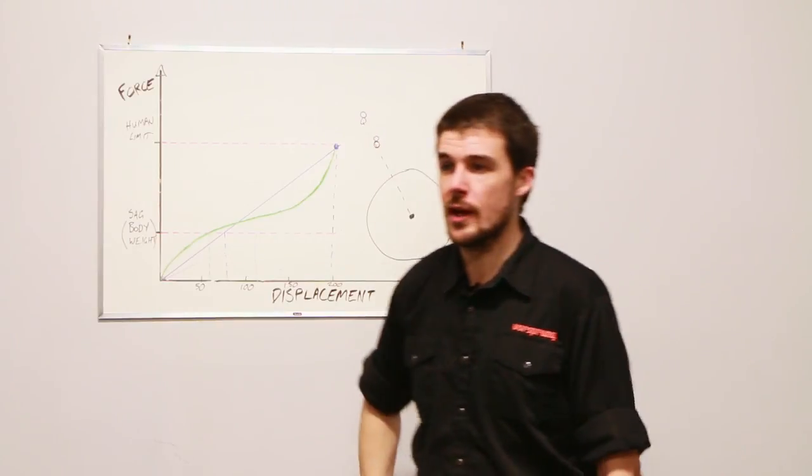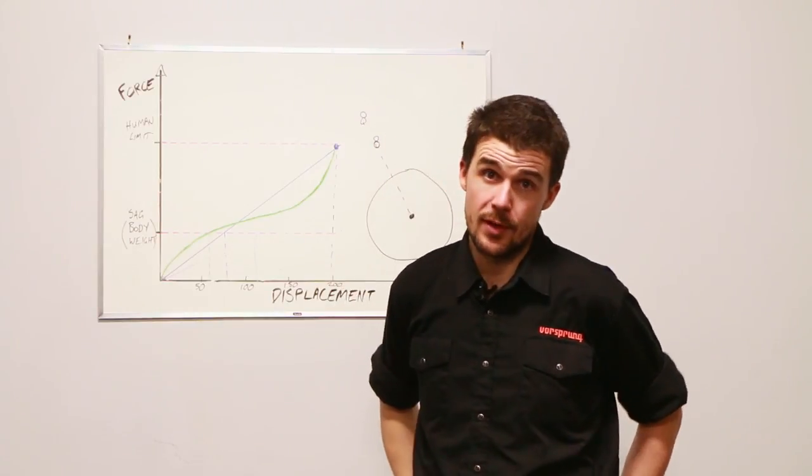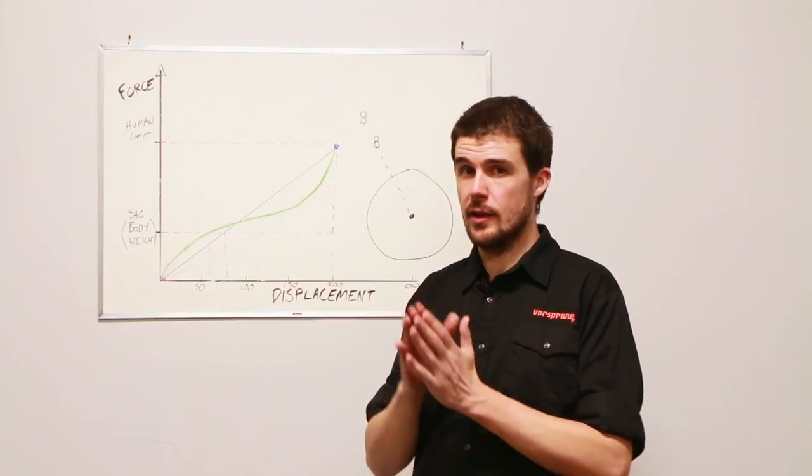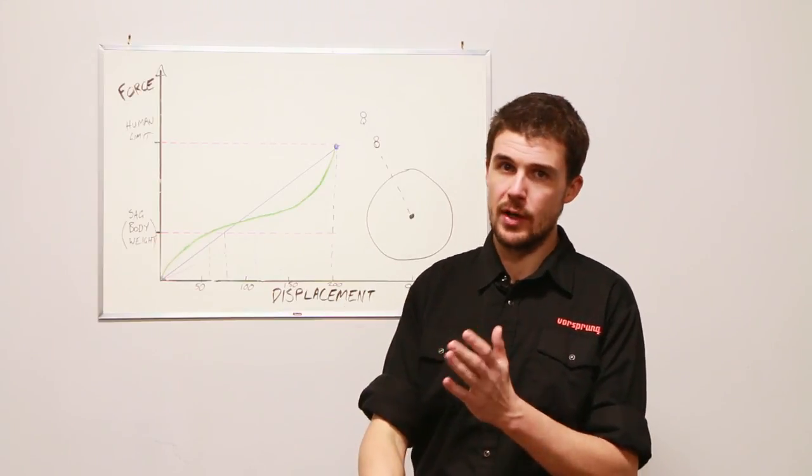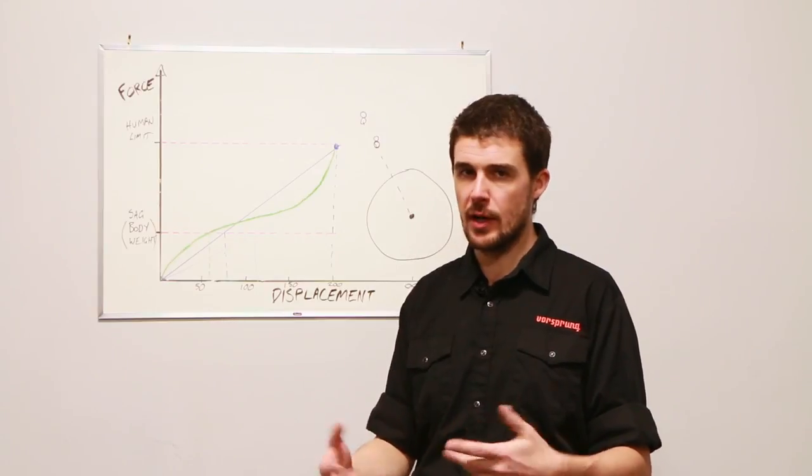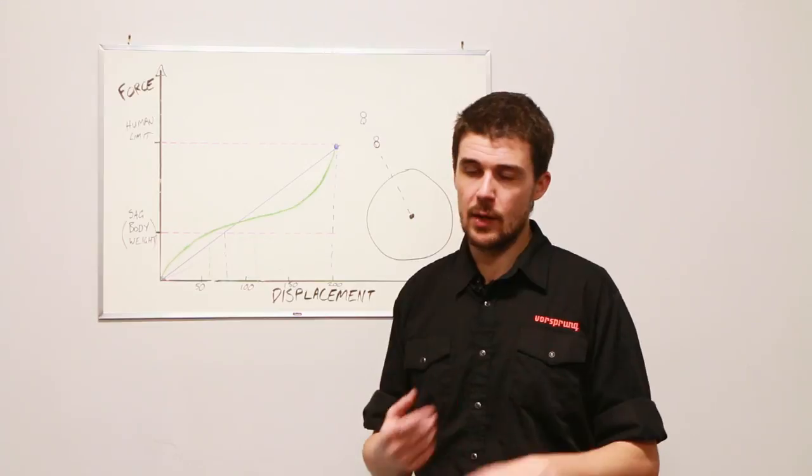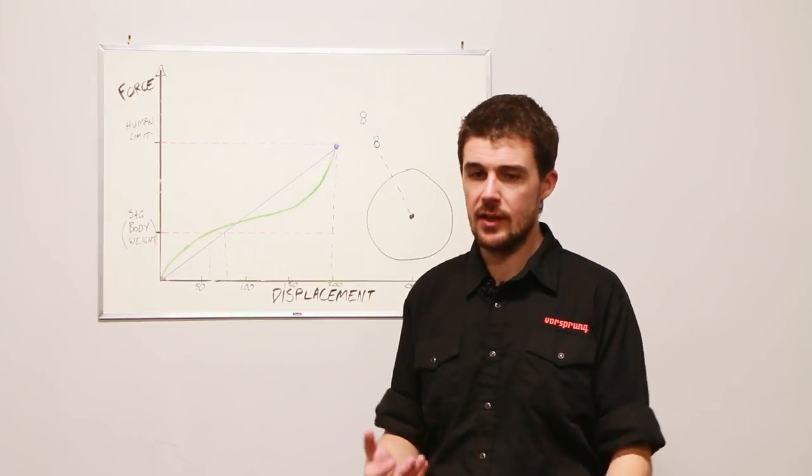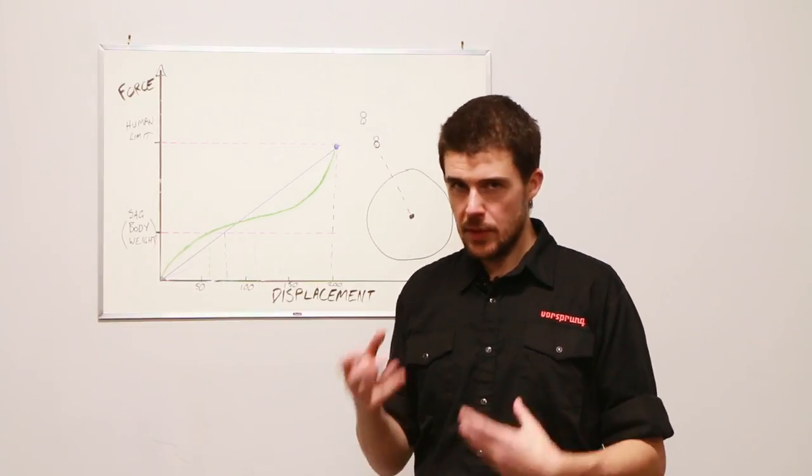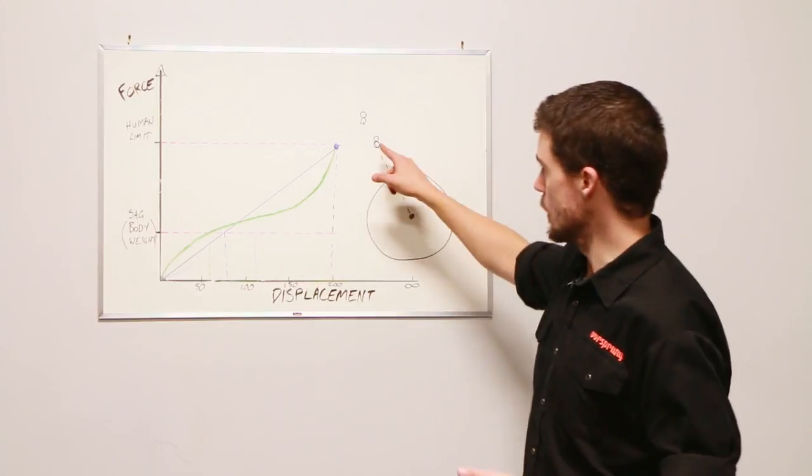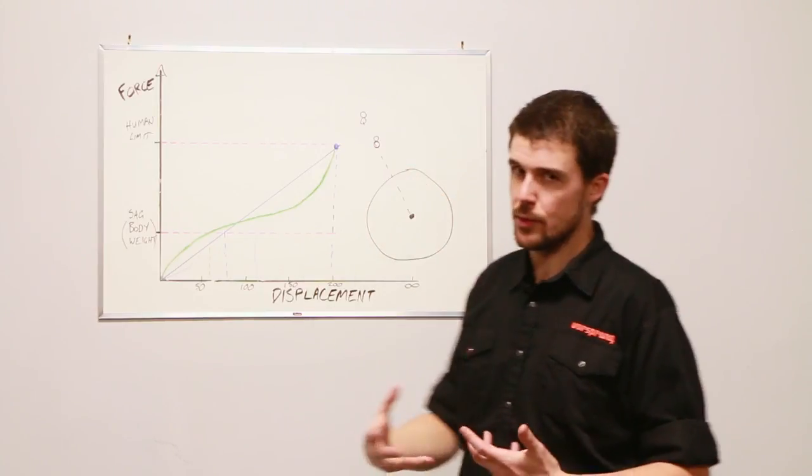This is a large part of the perception of fork dive. Commonly, when people are experiencing fork dive, it's not necessarily that they're feeling the fork displacing too far. What they're feeling is that the front end of the bike, the handlebars, end up feeling too low. When they're braking, when they're on something steep, essentially, any sharp deceleration. Because of this, we have to look at how did we come to be in a position where the handlebars were too low?